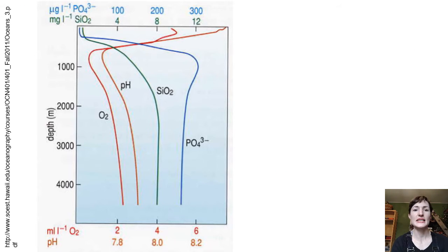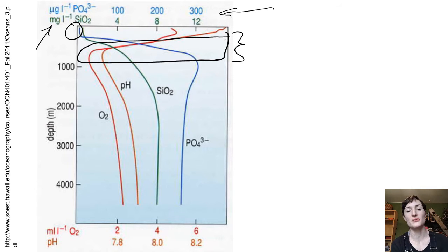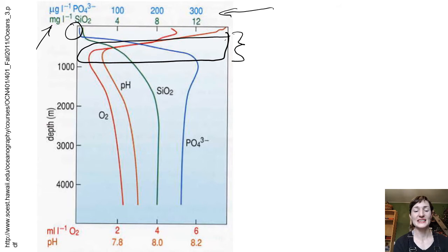In this graph, phosphate is shown in blue and silica in green. Phosphate concentrations are really low in the upper euphotic zone, then rise rapidly through the pycnocline and stay pretty consistent at depth — there's a good amount of phosphate in the lower layers because it's not being used up by photosynthesizers. It just stays stable as it sinks to the bottom. The same pattern happens with silica.